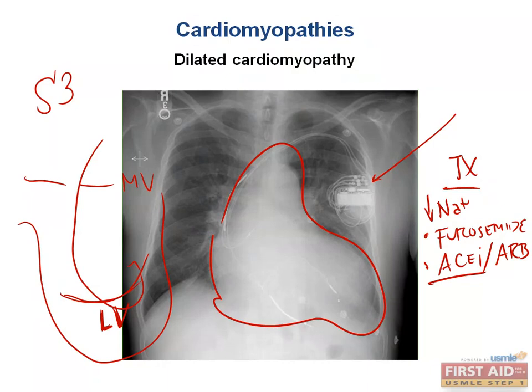If things really deteriorate and there is such a low contractile force, you can place them on an implantable cardioverter defibrillator, known as an ICD. If they are really bad, you go straight to heart transplant, which will be the last step.